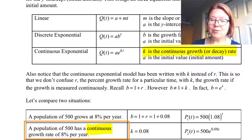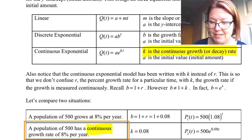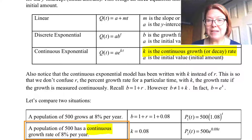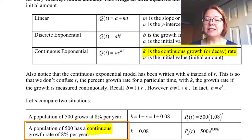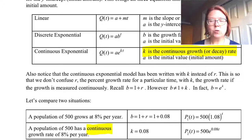For the second scenario, a population of 500 with a continuous growth rate of 8%, that continuous growth rate is k, and that's 0.08. We write this model, P₂(t) equals 500e^(0.08t).